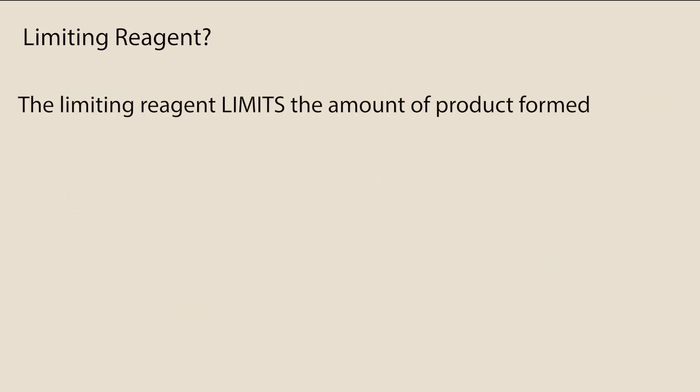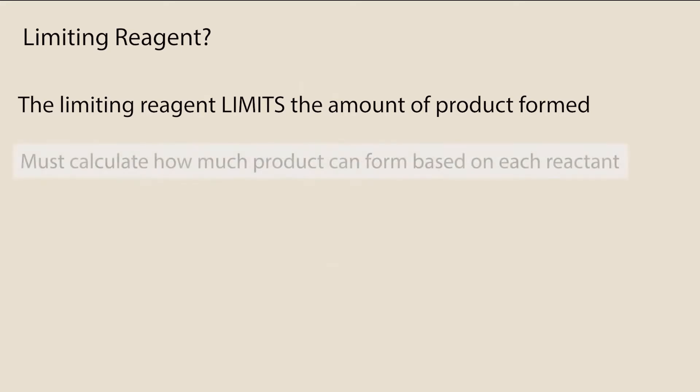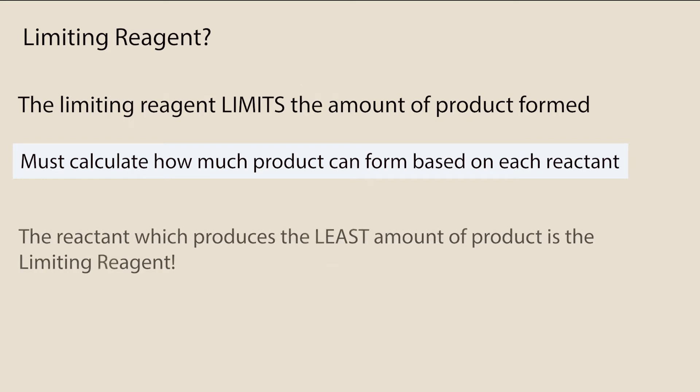The limiting reagent limits the amount of product formed. In order to figure out which reactant is limiting, we must calculate how much product can be formed from each reactant if that particular reactant is fully consumed. The reactant that produces the least amount of product is the limiting reactant.